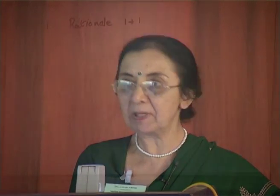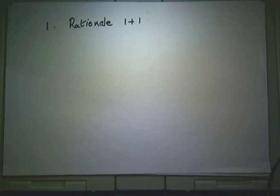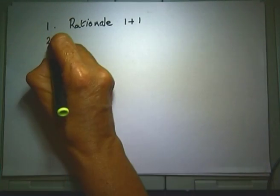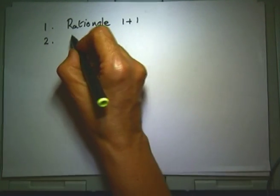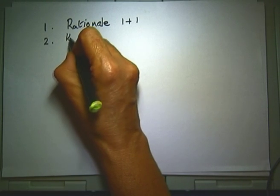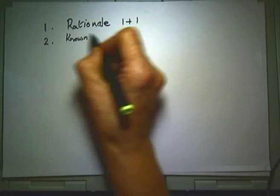Group two identifies item Q — that new ideas can be related to already established ones — which relates to the known-to-unknown principle.